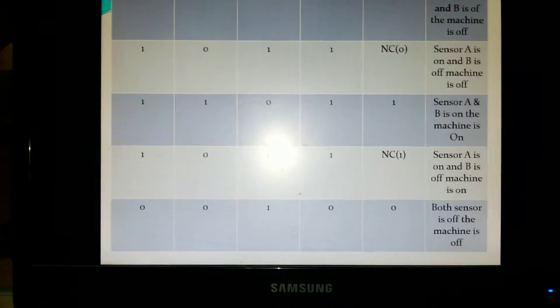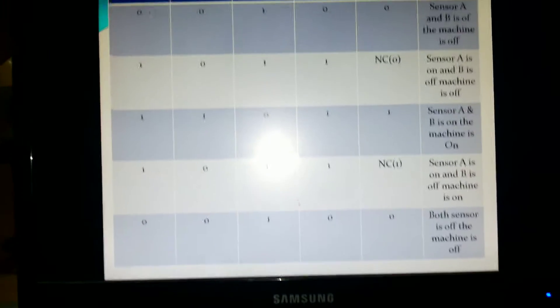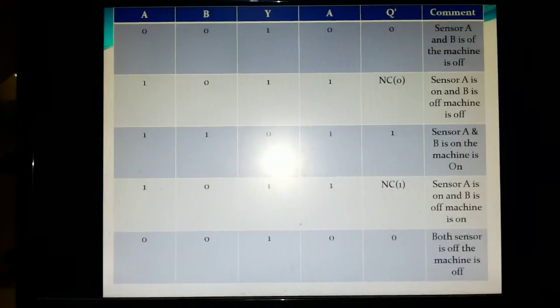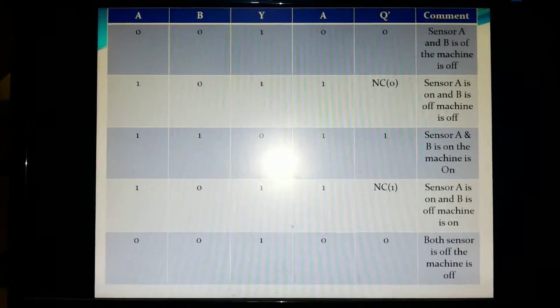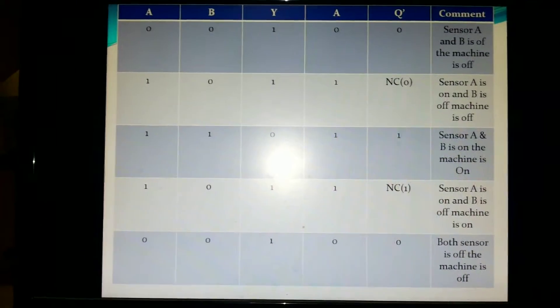When AB is 1, 0, the output is 1, 1 and Q bar gives us no change. That means sensor A is on and B is off, so the machine is off. There is no change from the previous state.